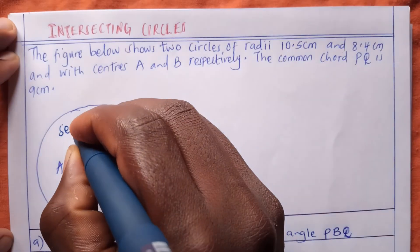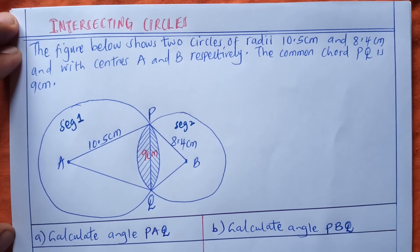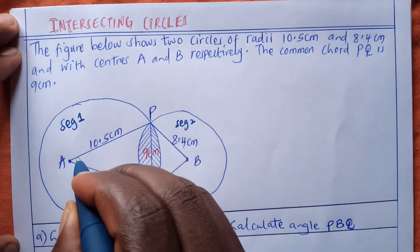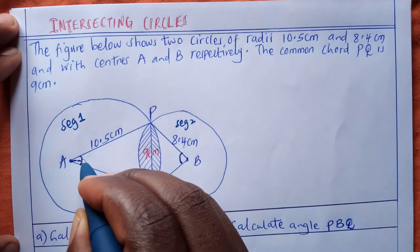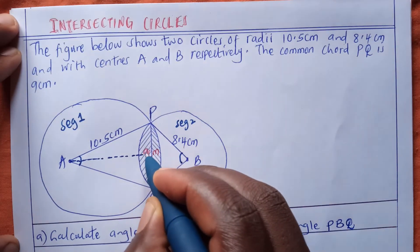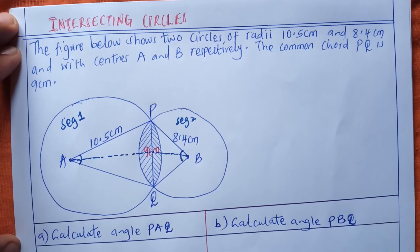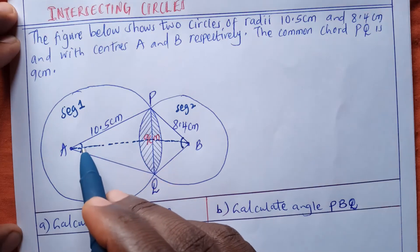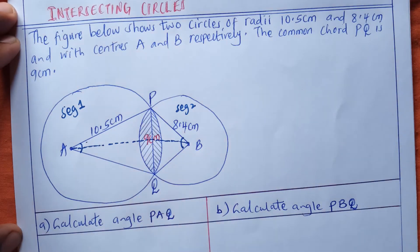Let's call this segment one and this segment two. Now we want to calculate the angles here. To get angle A and angle B, we have to remember something from form two trigonometry — SOHCAHTOA. We are going to use sine. We'll extract the right angle triangle, and after finding the half-angle we will multiply by two to get the full angle.